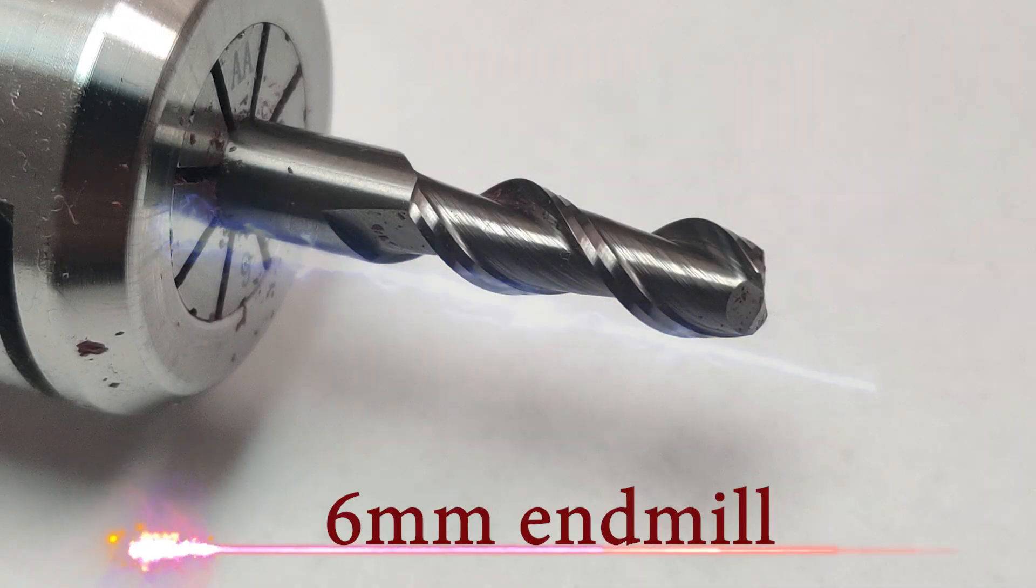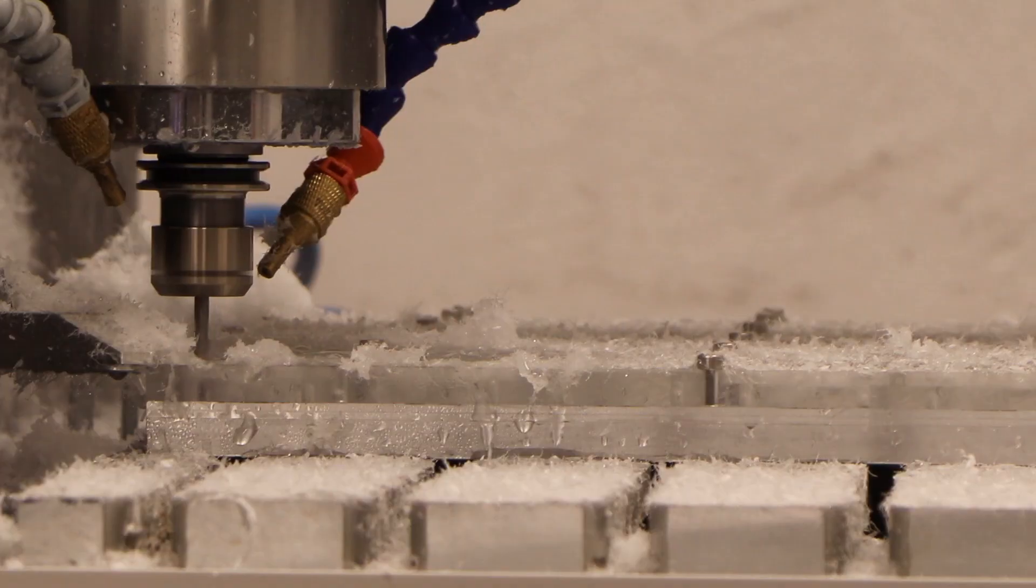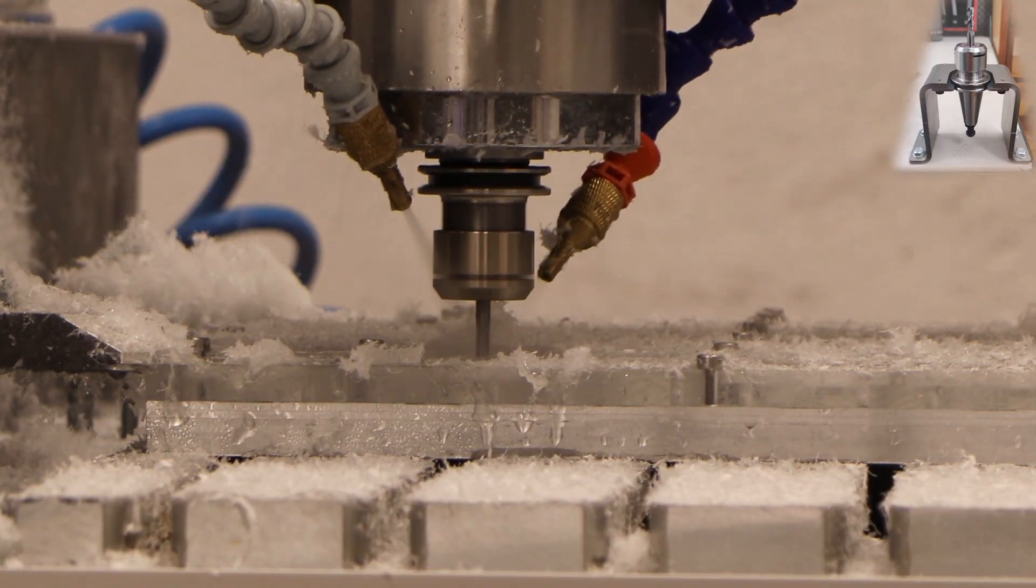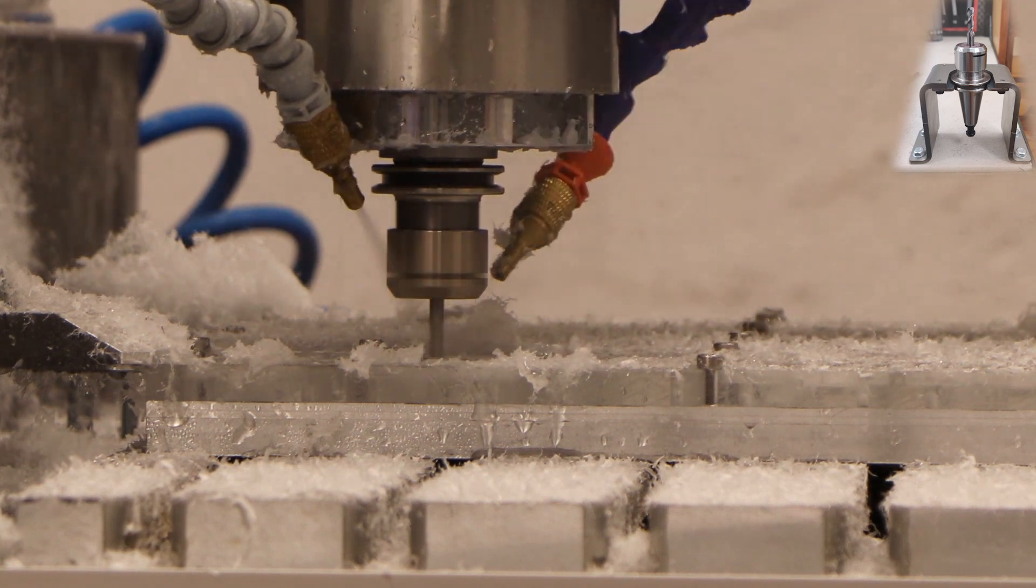6mm end mill. Here you can see cutting of chamber for all the internal parts of the Encore.